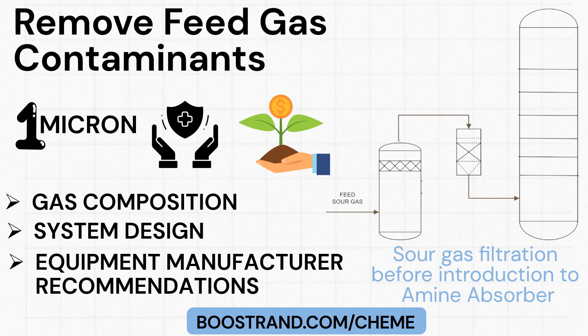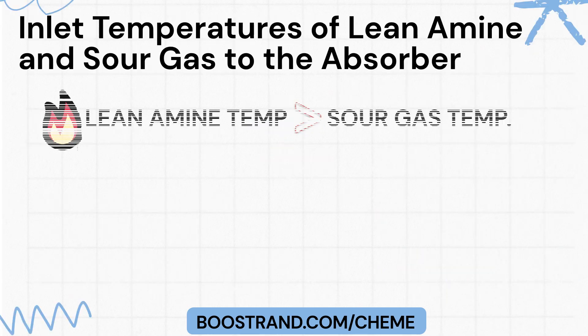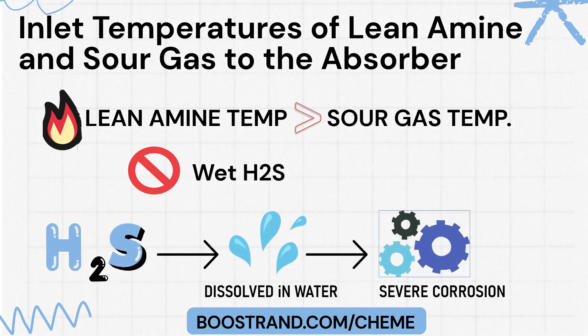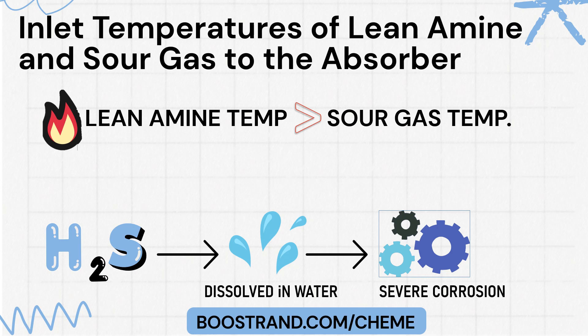The lean amine is kept at a higher temperature than the sour gas to prevent the formation of wet hydrogen sulfide or sour water. Wet H2S forms when the sour gas cools below its water dew point, causing moisture to condense and dissolve the H2S. This creates an acidic, corrosive solution that can lead to equipment corrosion and operational problems like foaming and fouling. To avoid wet H2S formation, it's common to introduce the lean amine to the contactor at a temperature higher than the sour gas by 5 to 10°C.